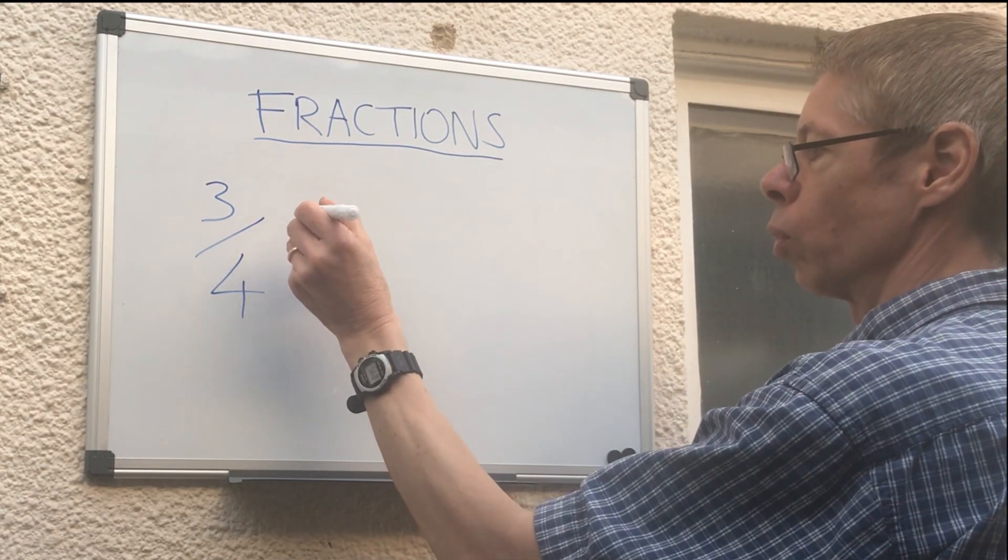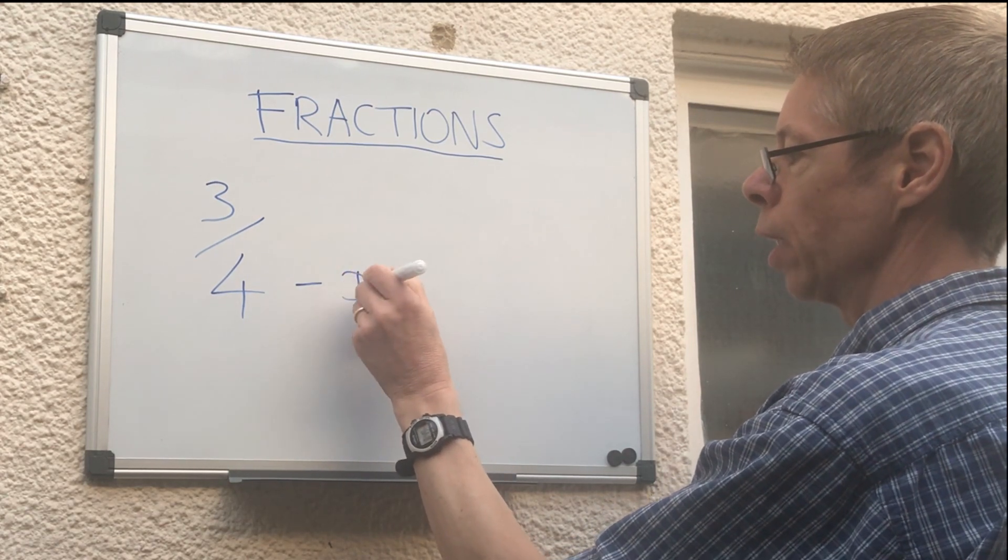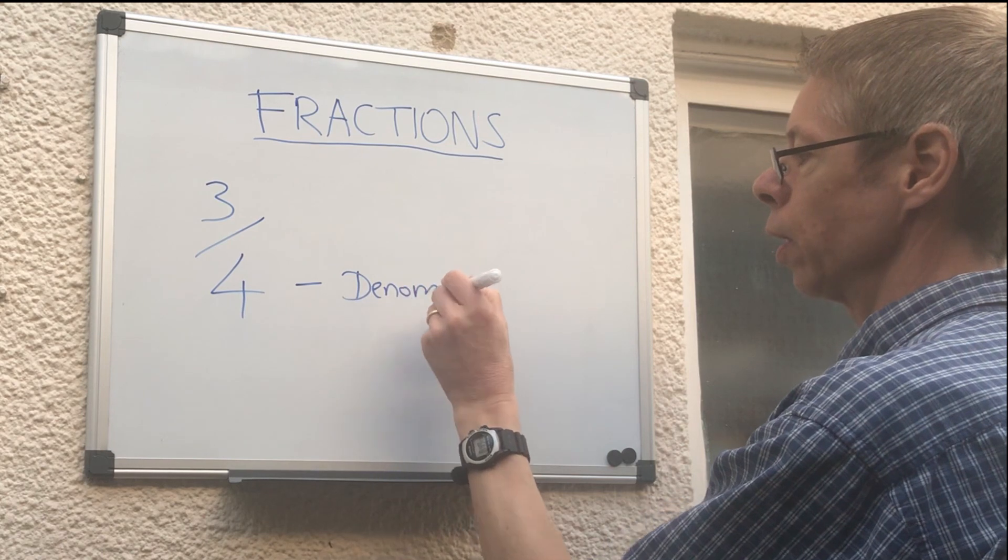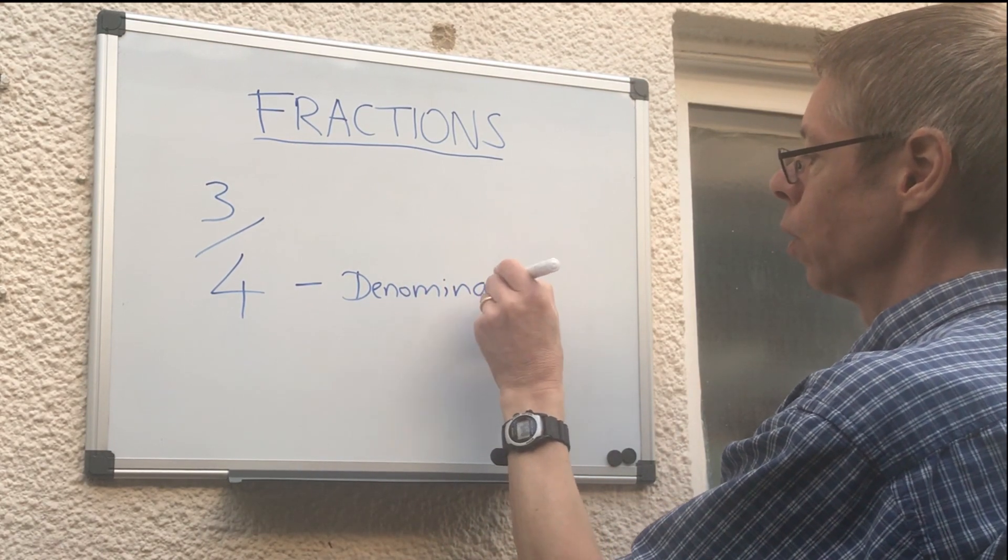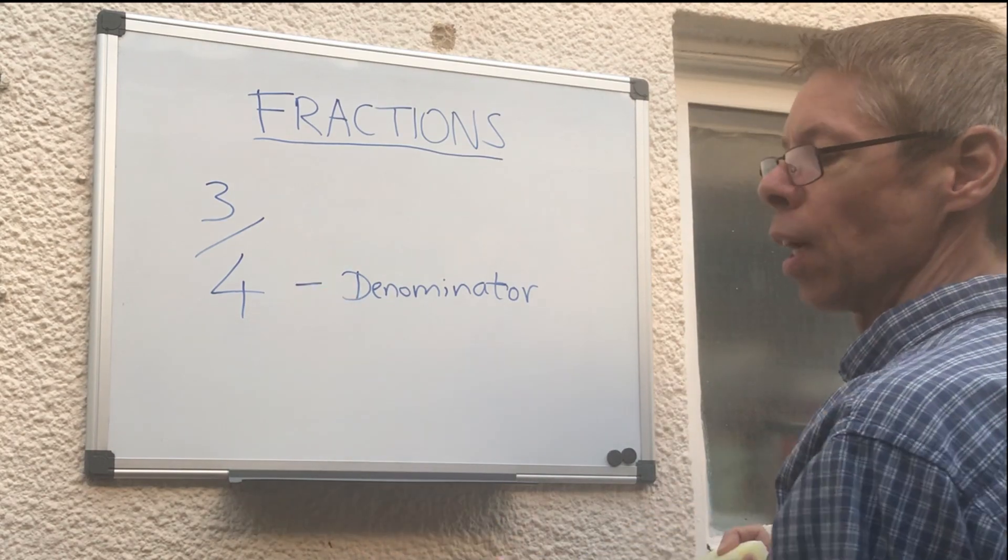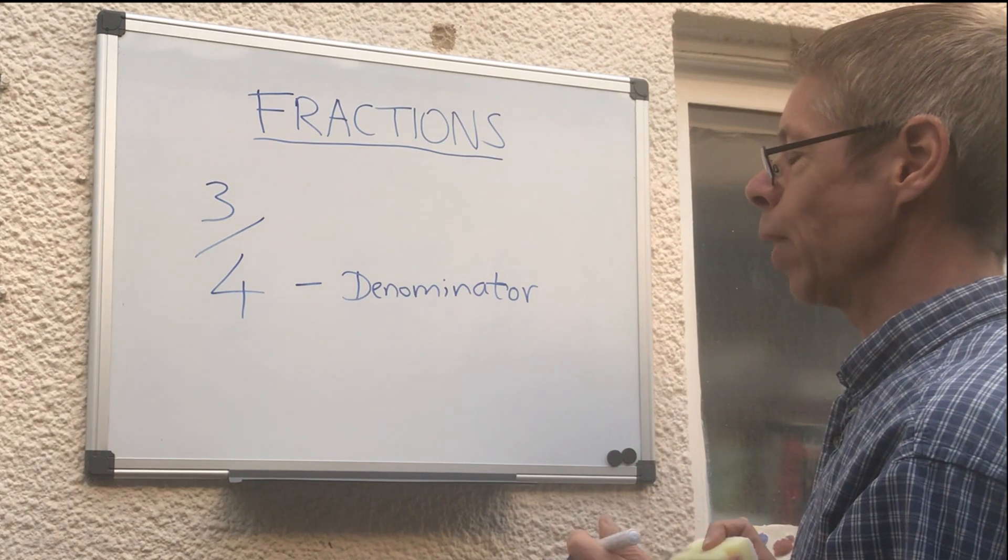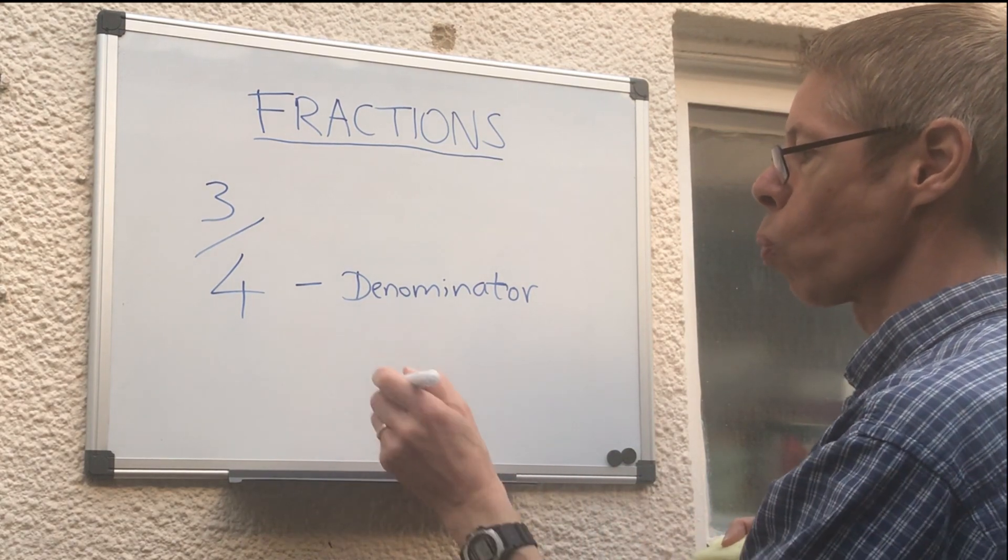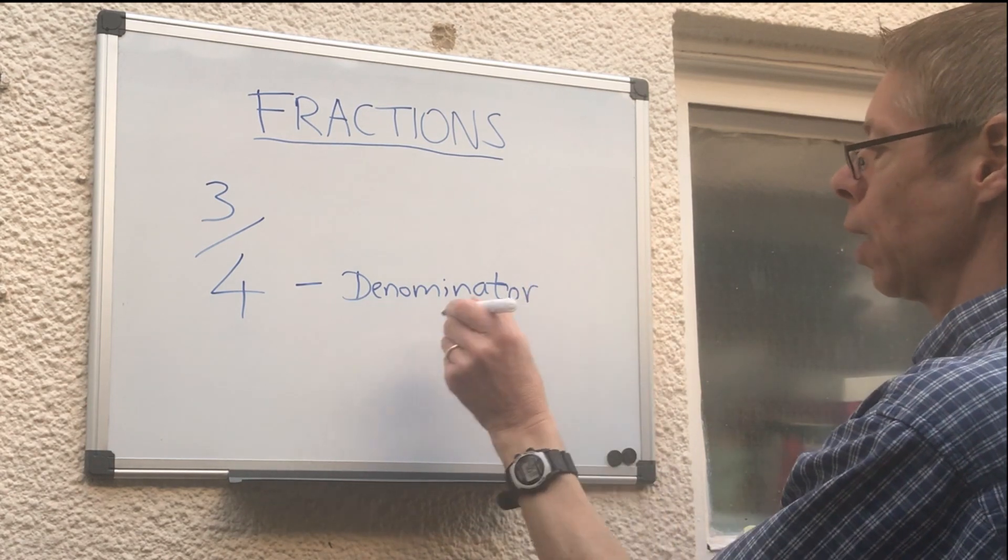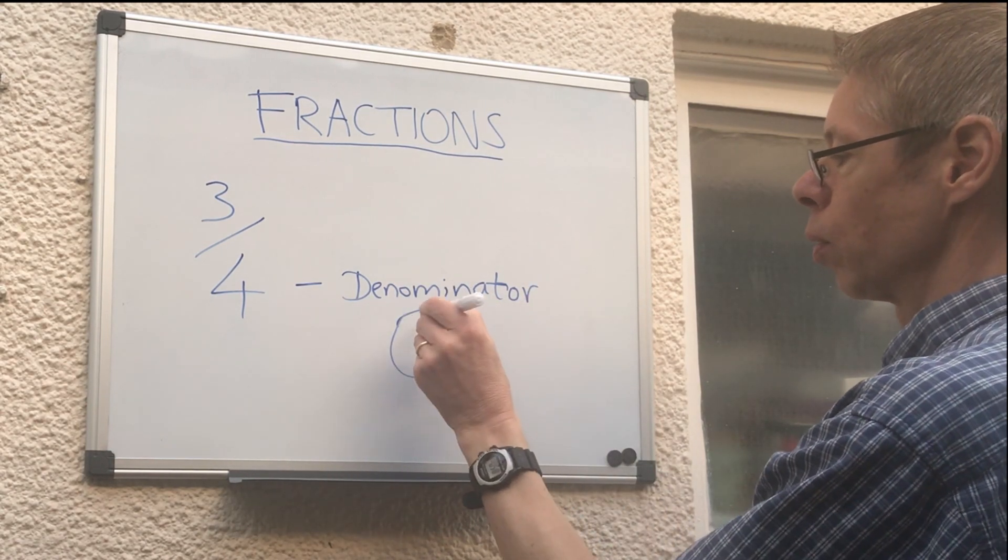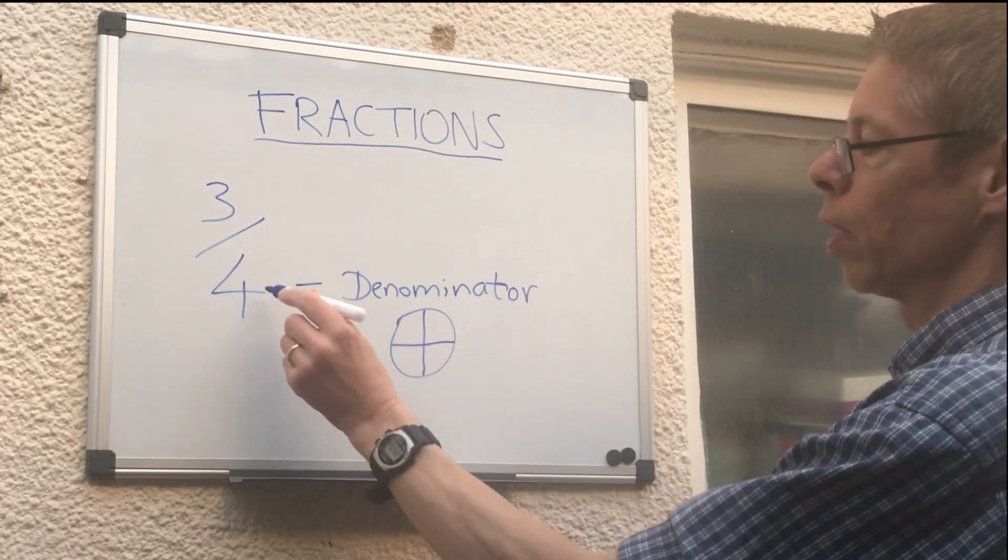So this, perhaps this word is the most important. This is called the denominator. This tells you how many pieces your biscuit or your pizza has been divided into. Okay, so we've got the 4 there, that means our biscuit or pizza was divided into 4. So that's the denominator.